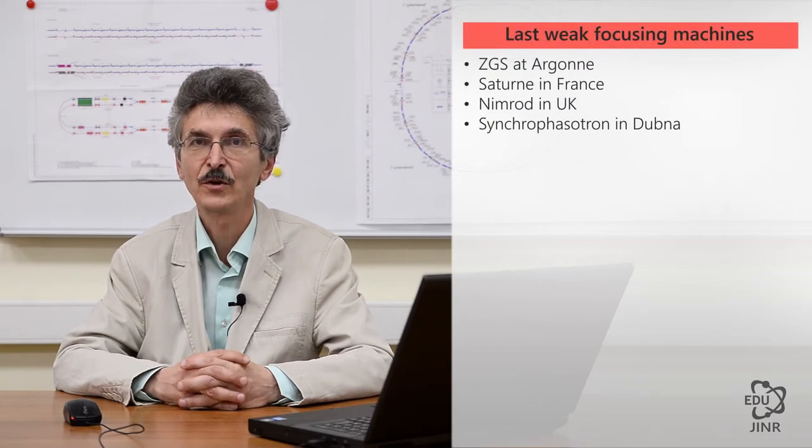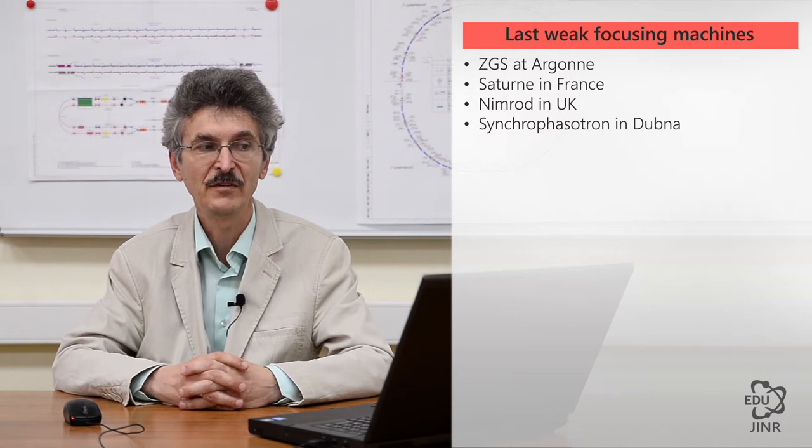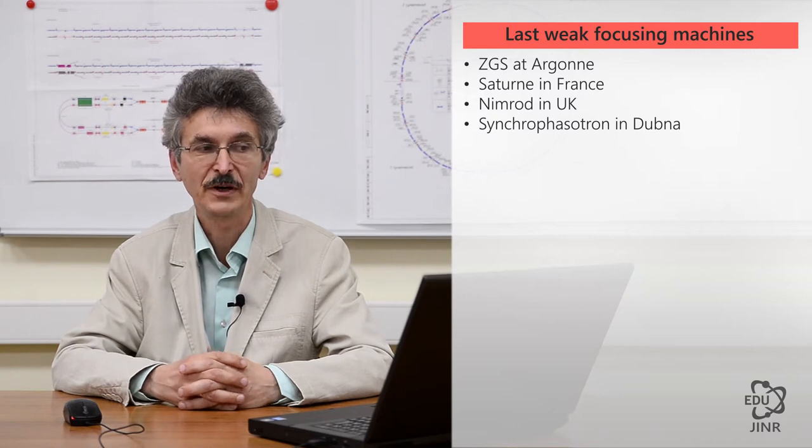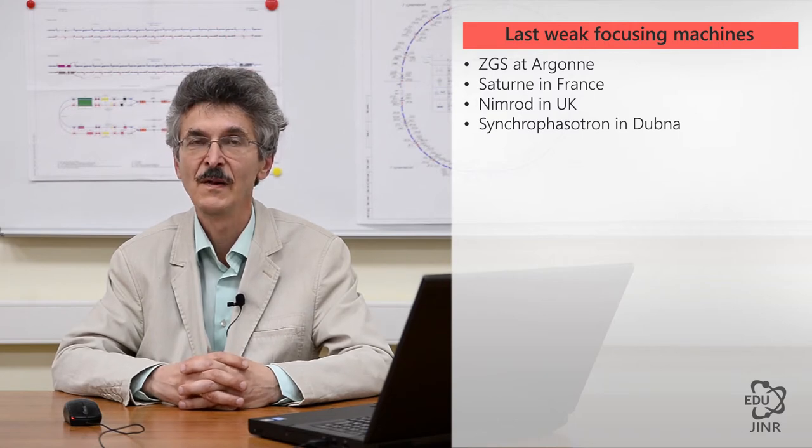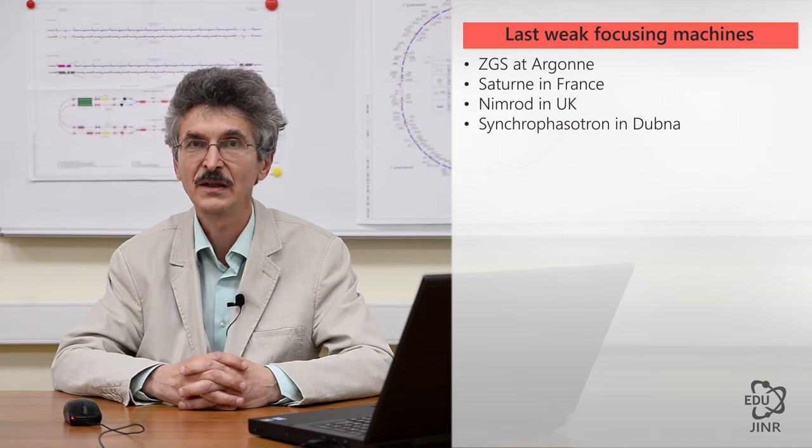Later on, a few other weak focusing synchrotrons were built. Among the famous ones are the weak focusing synchrotrons in Argonne, the Saturn in France and the Nimrod in the UK. But the most well-known facility of such a class is the synchrophasotron in Dubna.